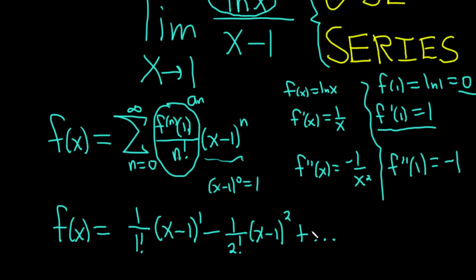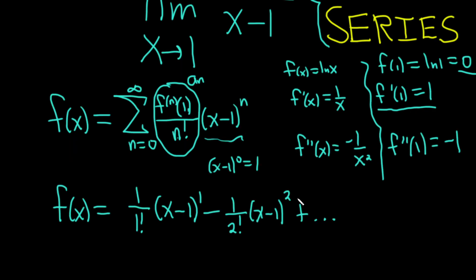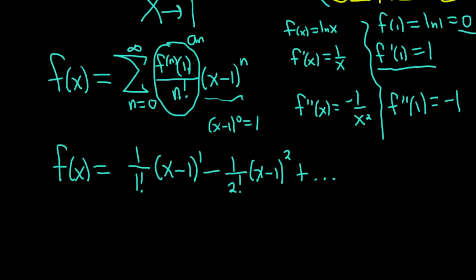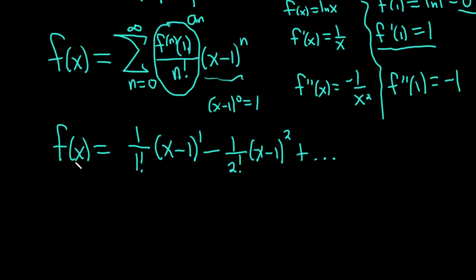It probably alternates along those lines. And then so now we can write this. So f(x), this is really ln(x), right? This is x minus 1 minus 1 half x minus 1 squared plus dot, dot, dot.